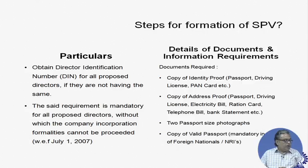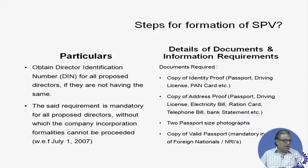The next step is to obtain the DIN — the Director Identification Number. A Director Identification Number is required for every person who wants to be a director of the company, because at the end of the day you have to propose the names of directors, and whoever is proposed as a director must have a Director Identification Number. On the other side of the slide you will find all the documents listed that are required for this particular purpose.